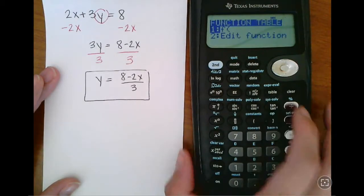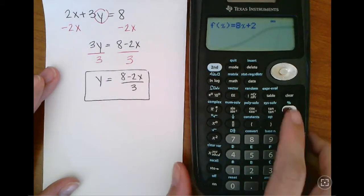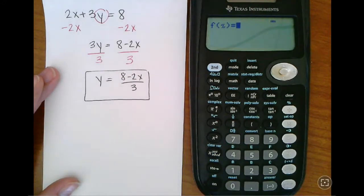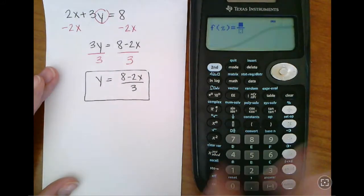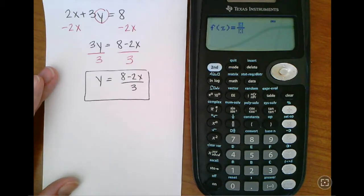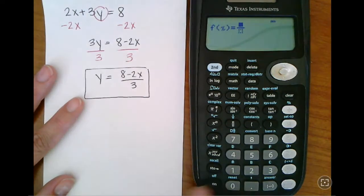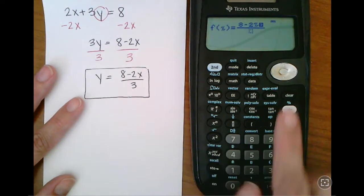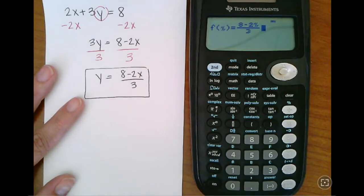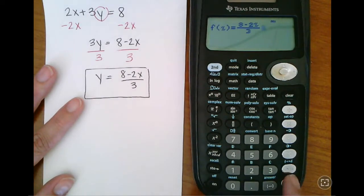I'm going to go back to my table, edit my function. I want to put in a new function, so I'm going to press clear, use that fraction button. You can even type this in so it looks exactly like what I have on my page: 8 minus 2x over 3. Once I confirm that it looks exactly the same, I can press enter.